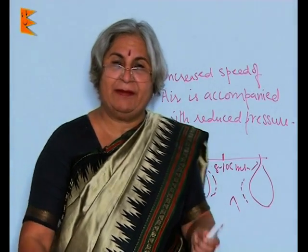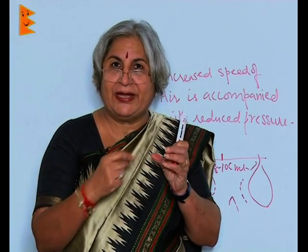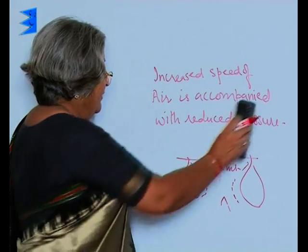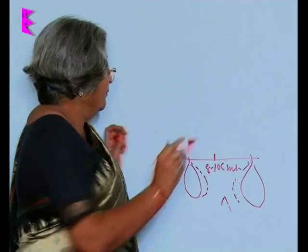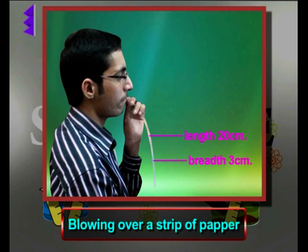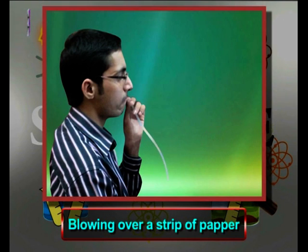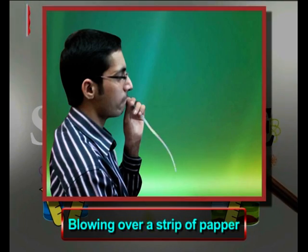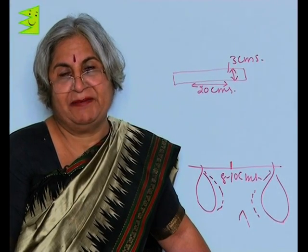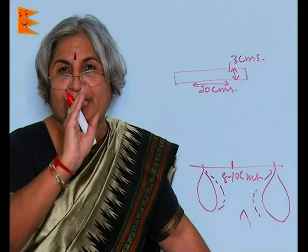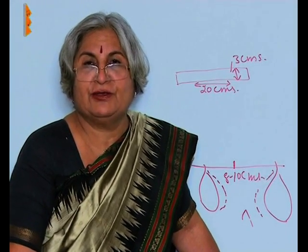Have you played that game where you make a strip of paper about 20 centimeters long and 3 centimeters wide, and then blow air over it? When you put it in your mouth and blow air, the last part of the strip comes up. Again, the concept is the same — because when you blew air, the pressure got reduced, so the strip moved up to take the place of the reduced air pressure.